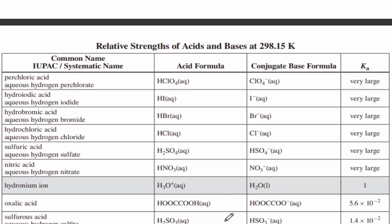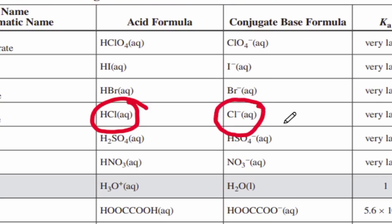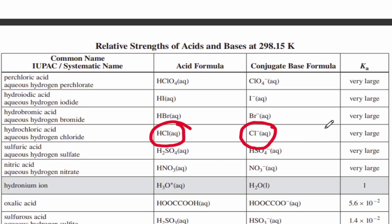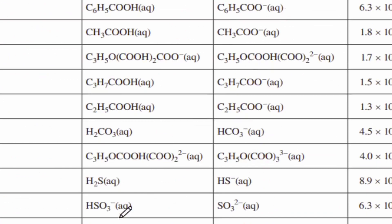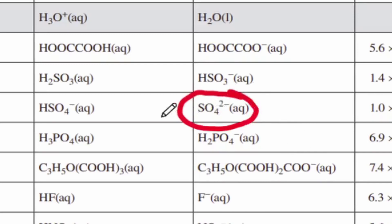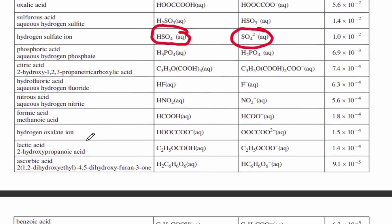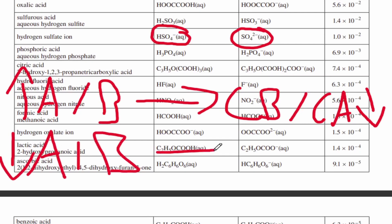One last thing to know is that conjugate pairs are opposites in strength. HCl is a strong acid, so its conjugate pair Cl⁻ will be a really weak conjugate base. The stronger bases are at the bottom of the data booklet and the weaker bases at the top. OH⁻ is the strongest base, so its conjugate pair H2O will be the weakest acid. Conversely, H2S is a weak acid, so its conjugate pair will be a stronger conjugate base. SO4²⁻ is a weak base, so its conjugate pair HSO4⁻ will be a stronger conjugate acid. Remember: to write conjugate pairs, opposites go together — if the acid or base is strong, the conjugate will be weak; if the acid or base is weak, the conjugate pair will be strong.